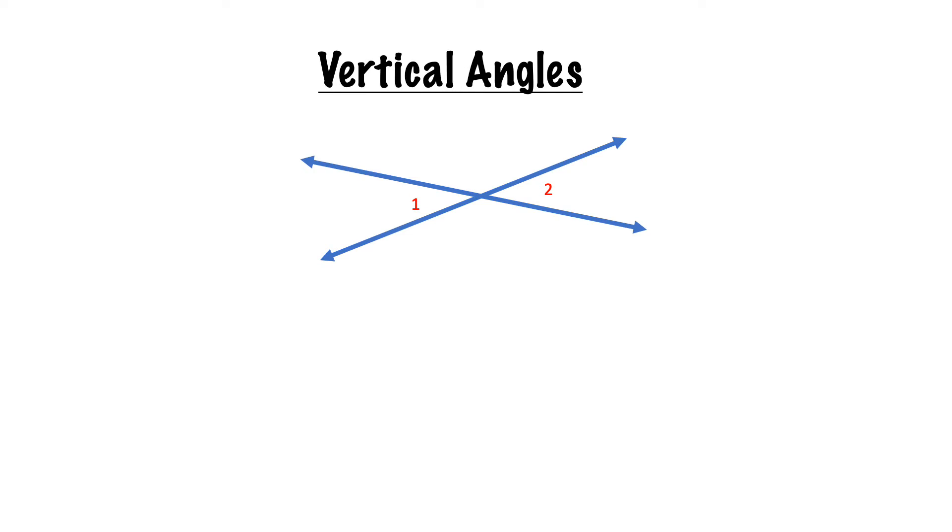Vertical angles are formed by intersecting lines. Angle one is across from angle two. And if you notice, angle one is equal to angle two in size and shape. So vertical angles are congruent.